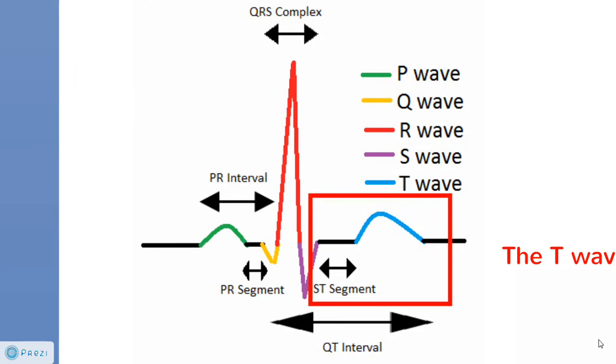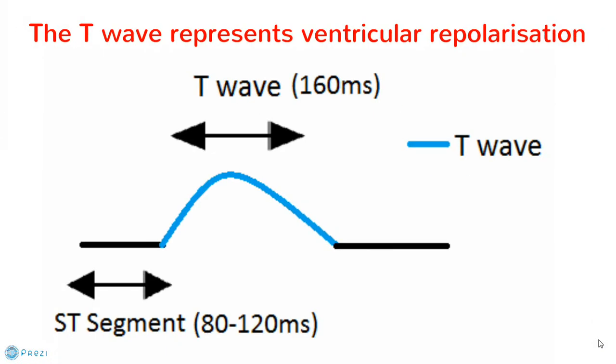In this final section, we can see the ST segment that lasts between 80-120ms. It is a light isoelectric line that responds to ventricular contraction. But as the myocardium cells are depolarised to the same potential, you get a flat line. Then we get a T wave, which represents ventricular repolarisation and lasts about 160ms.